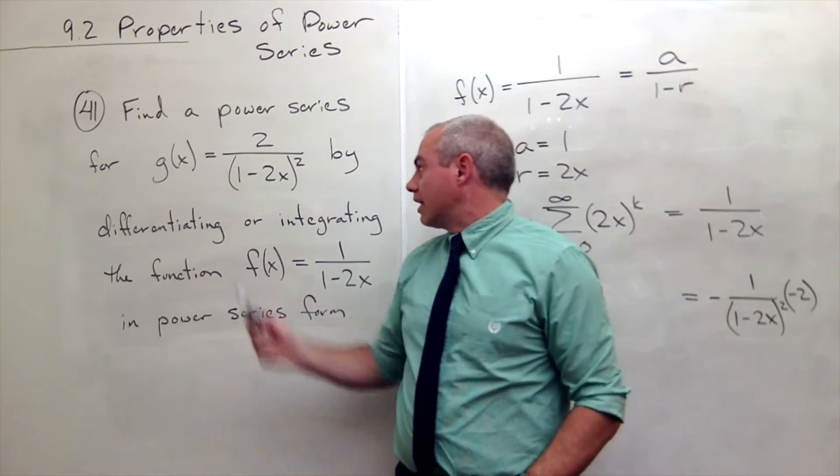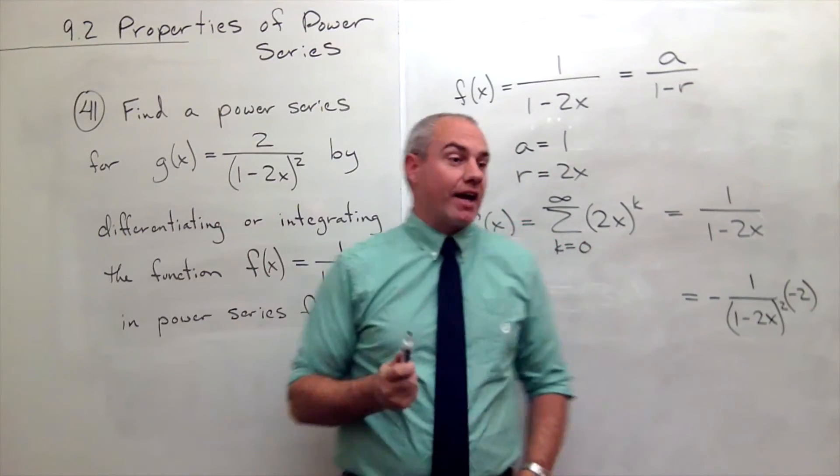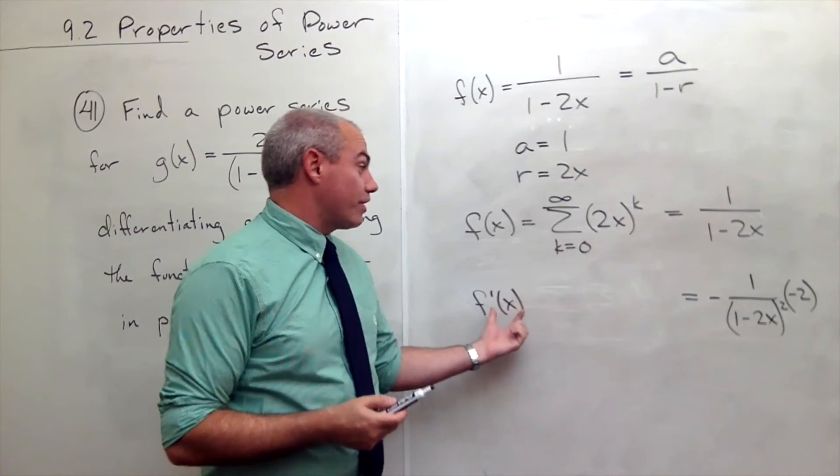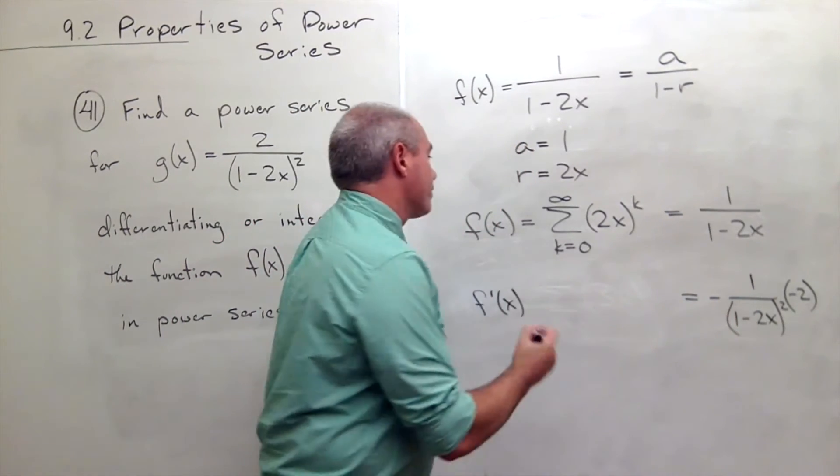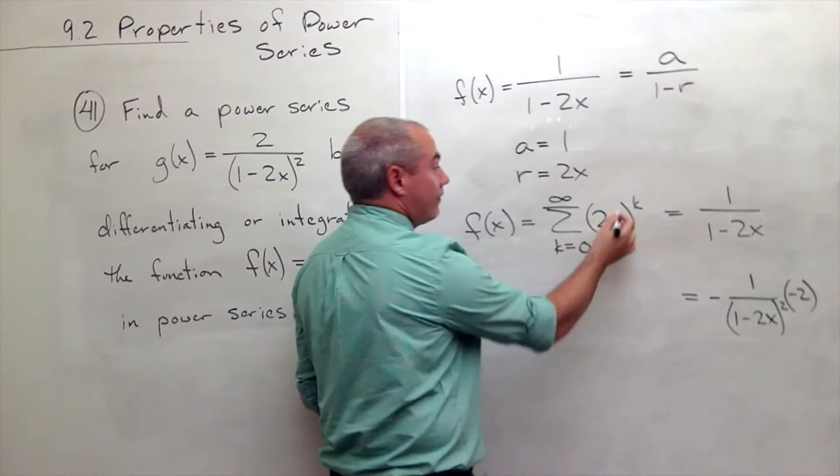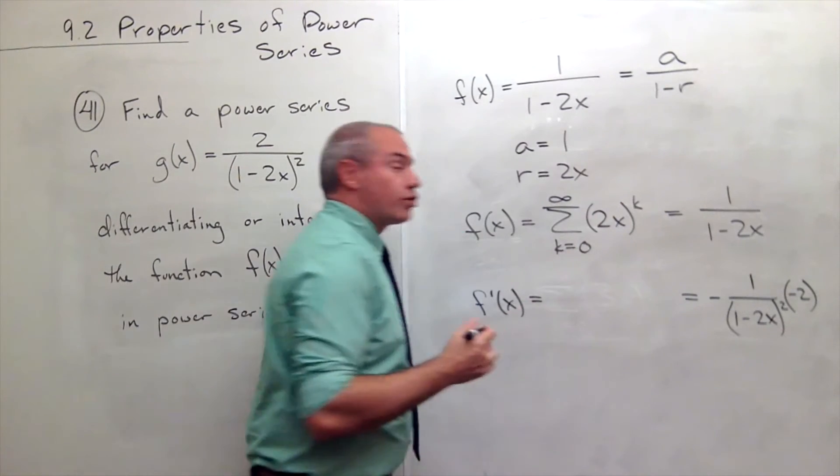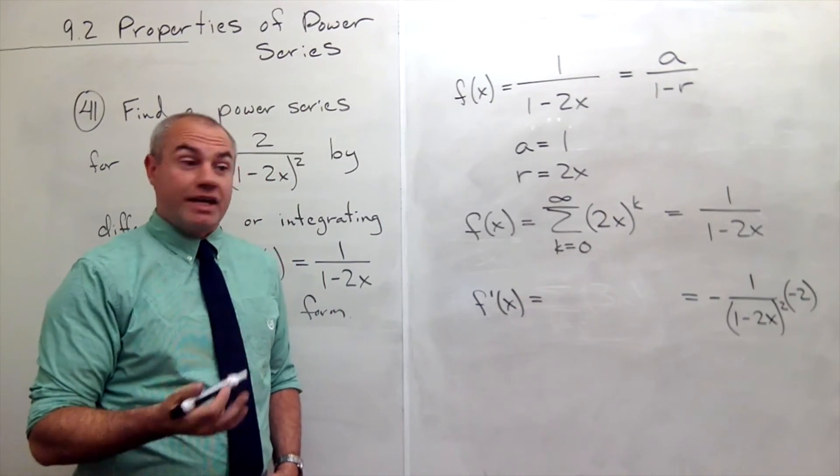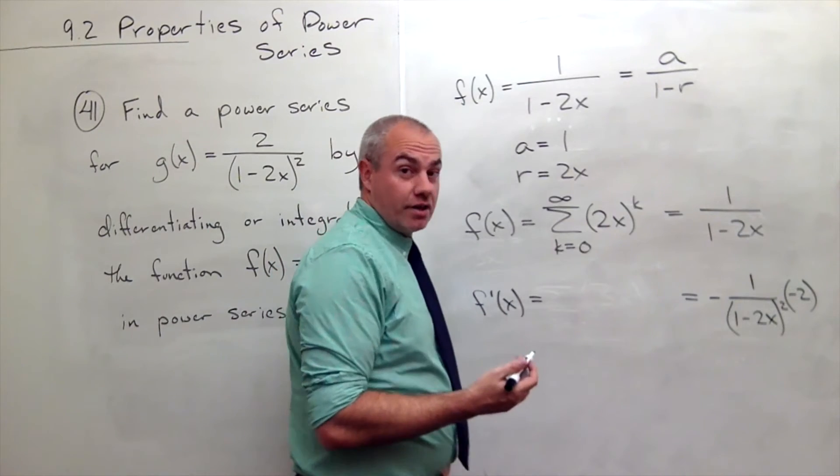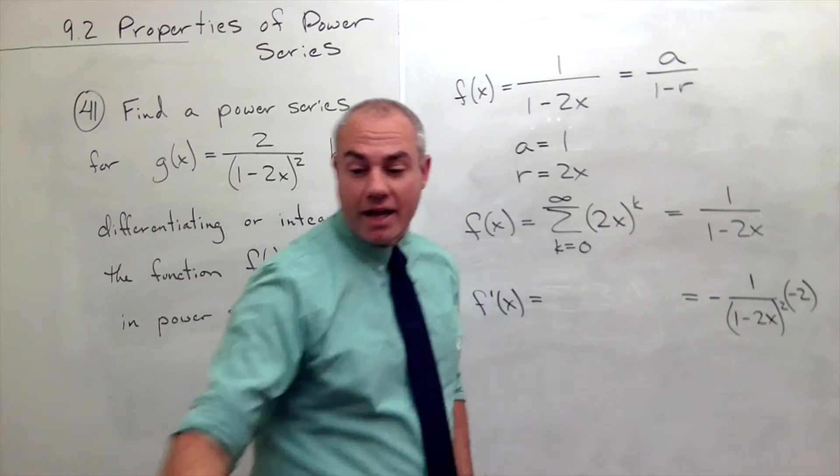So another way of saying that is it's 2 over 1 minus 2x quantity squared. But wait a second, that's exactly g(x). So this is g(x), the derivative. So if I just take a derivative of this power series, term by term, I'll get g(x).